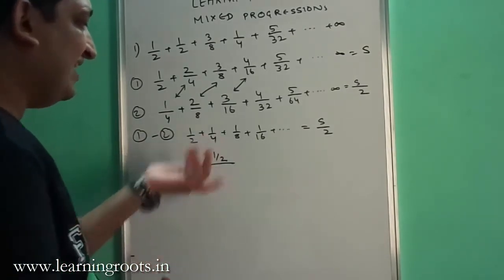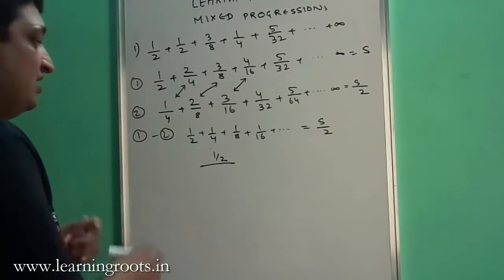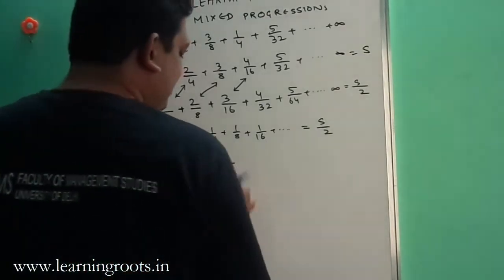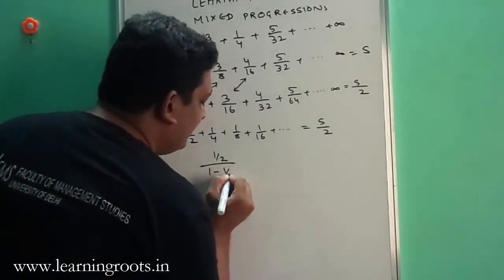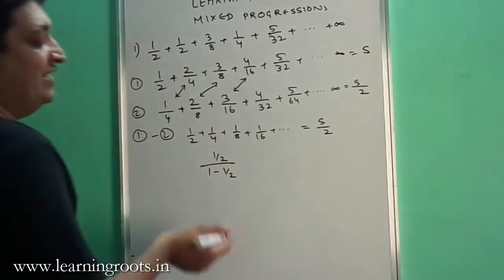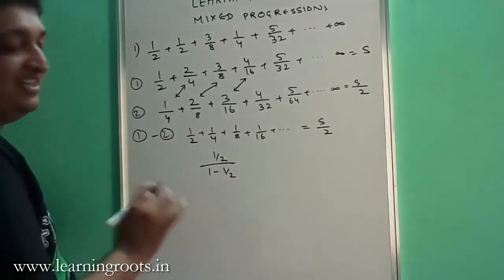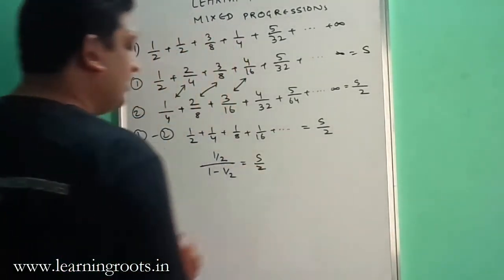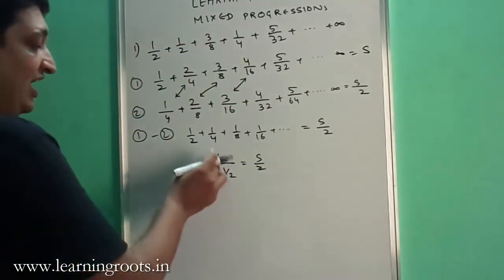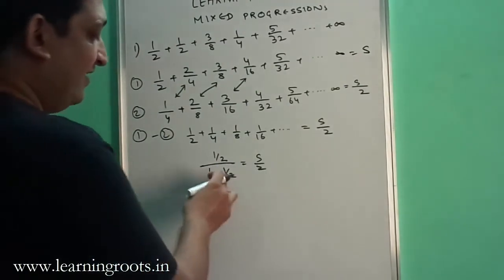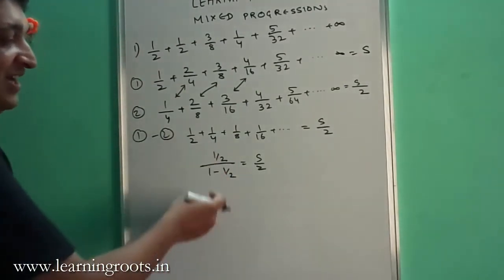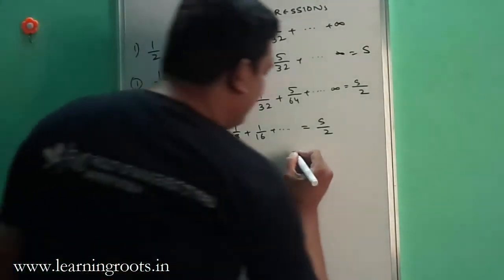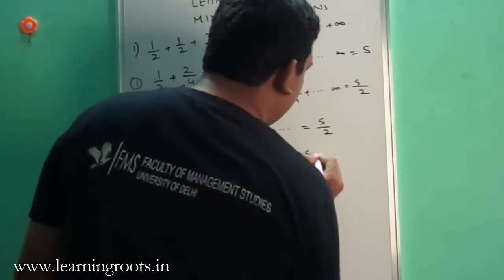In this case r is 1/2, so that condition is satisfied. The first term is 1/2 and 1 minus r is 1 minus 1/2, which equals 1/2. This is equal to S/2. So 1/2 divided by 1/2 is 1, and therefore S equals 2.